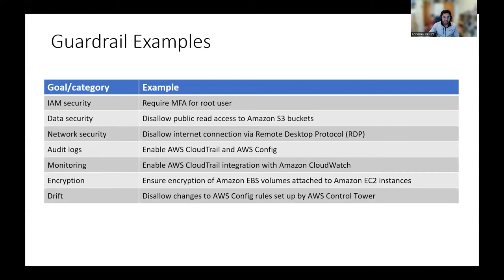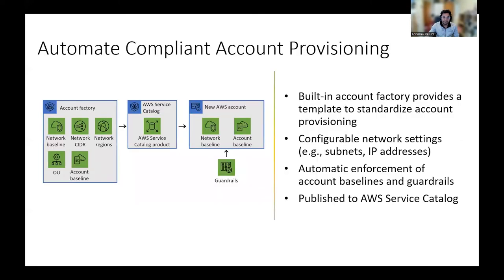Next is automating compliant account provisioning. With the help of account factory, we can automate provisioning of AWS accounts. The backbone of account factory is AWS Service Catalog. Account factory enables you to provision accounts in your landing zone. AWS Service Catalog lets you provision infrastructure like VPCs, networking layers, and application stacks that have been pre-approved by IT for use inside your accounts. While AWS Control Tower provides governance at an account level with the help of AWS Organizations, AWS Service Catalog can further provide granular governance at a resource level with the help of AWS Config rules.